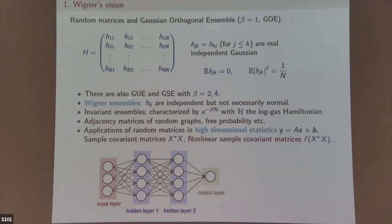The unitary ensemble is for the complex Hermitian case — quite practical and used in applications. Then there is the Wigner ensemble, which simply removes the Gaussian condition from each matrix element while keeping everything else the same. There is also an invariant ensemble of the form e^{-β H}, where H is a log-gas of eigenvalues.